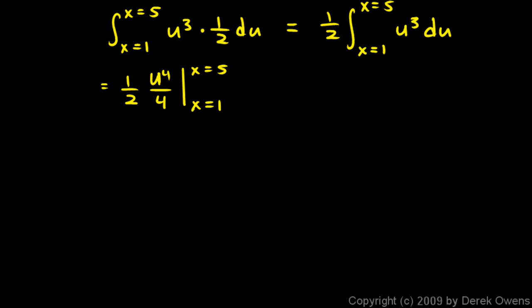And remember up at the top, u was 2x minus 5, so our integral is now 1 half times 2x minus 5 to the fourth over 4. All I did was substitute back in for u right there, the 2x minus 5. And this is evaluated from x equals 1 to x equals 5.